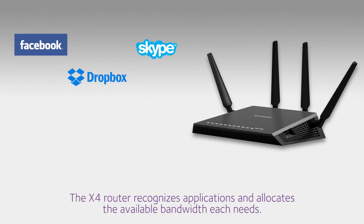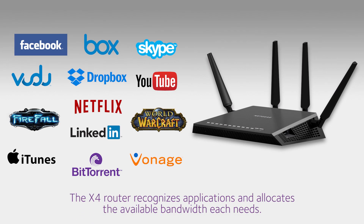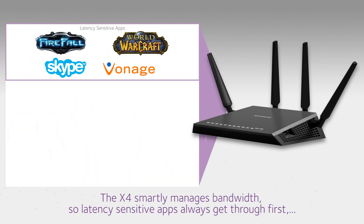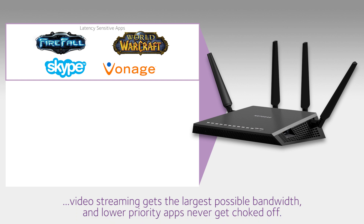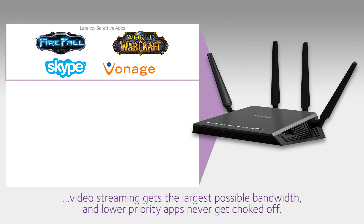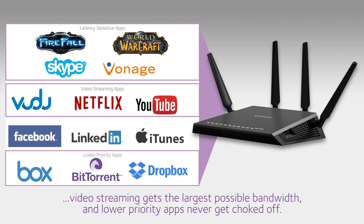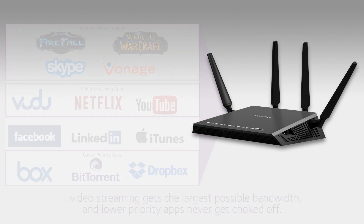First, the X4 recognizes applications and allocates the bandwidth required by each. The X4 smartly manages bandwidth, so latency-sensitive apps always get through first, video streaming gets the largest possible bandwidth, and lower priority apps never get choked off.